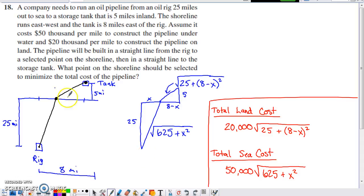It tells us the prices: $50,000 per mile to construct the pipeline under the water, and only $20,000 per mile to construct it on land. What we're going to do is build it in a straight line from the rig to a point on the shoreline, and then in another straight line from that point the rest of the way to the tank. What point on the shoreline should be selected to minimize the total cost?